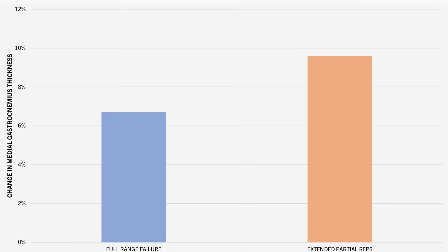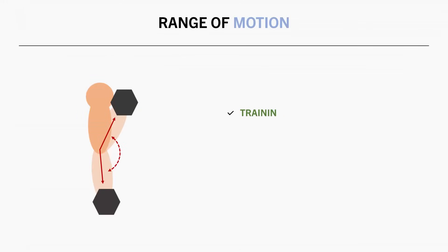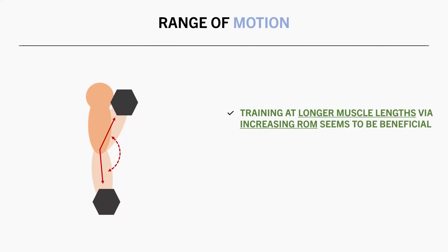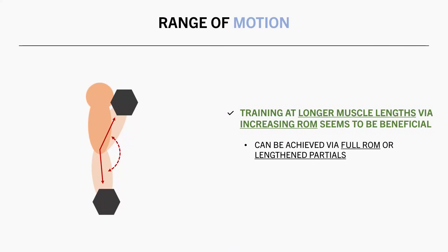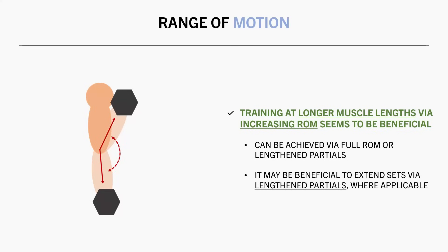So overall, it seems that achieving longer muscle lengths via training through a larger range of motion is beneficial for muscle growth. This can be achieved by training with a full range of motion or by performing partial reps in the lengthened half of the exercise. And for some exercises, it may be beneficial to perform additional lengthened partial reps as a way to extend a set beyond traditional full range of motion failure.